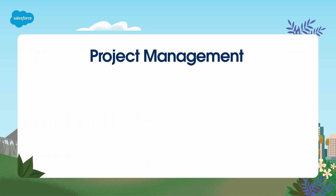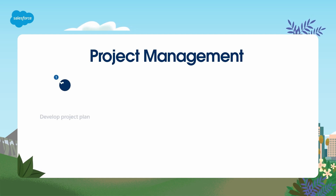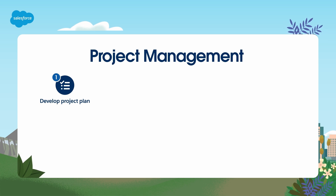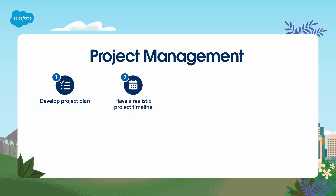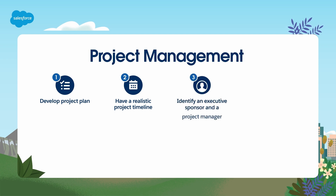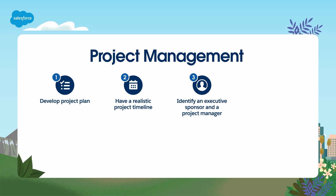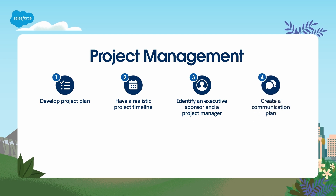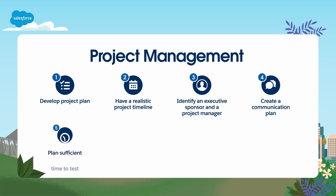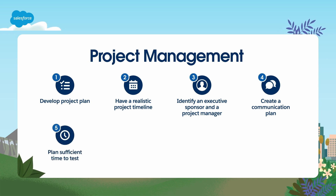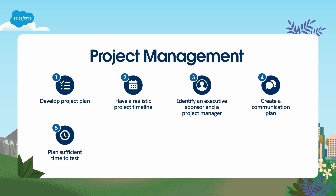Let's start with project management. Here are eight key project management tasks to keep in mind when you begin. First, follow a standard project plan for success. Second, make sure you have a realistic project timeline. Third, engage executive sponsors early on and identify a project manager. Also consider Salesforce services or partner involvement to increase project success. Next, have a formal communication plan — you'll want to communicate weeks in advance to impacted users. Fifth, allow sufficient time to test. Metadata and data migrations need to be tested and timed to estimate any outage windows during cutover.